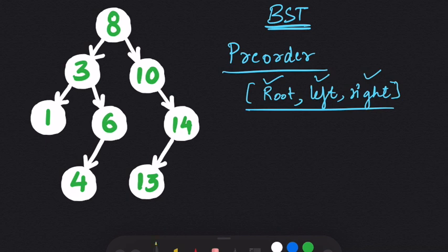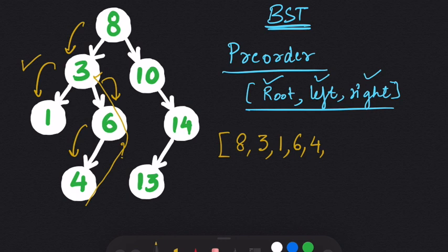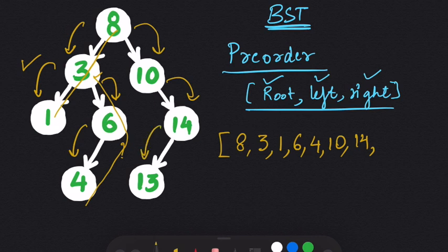In our tree, traversing in pre-order, the first element is the root (8). Then we come to the left node, which is 3, and then the left node of 3, which is 1. Since that path is exhausted, we come to the right node of 3, which is 6. Node 6 has a left node which is 4 and no right node. We then go back to the root and visit the right subtree: 10, then 14, and 14 has only a left node which is 13.